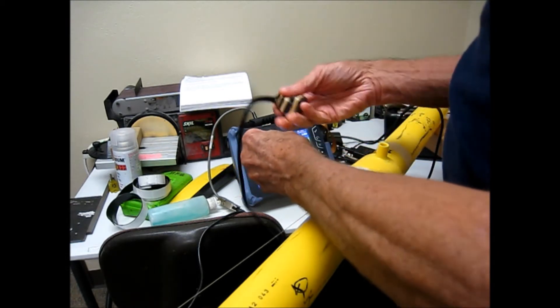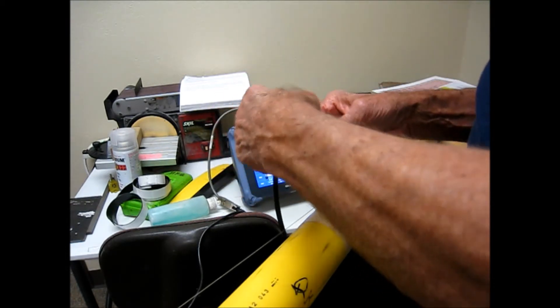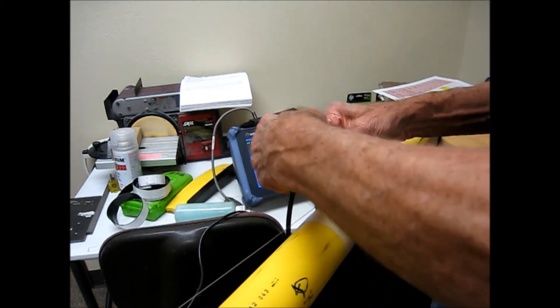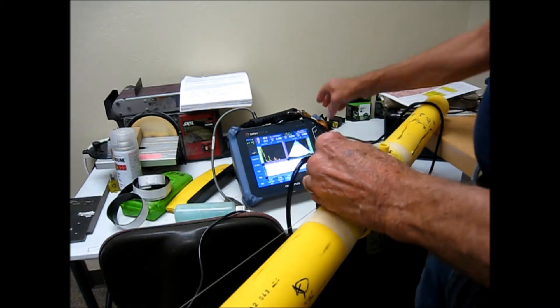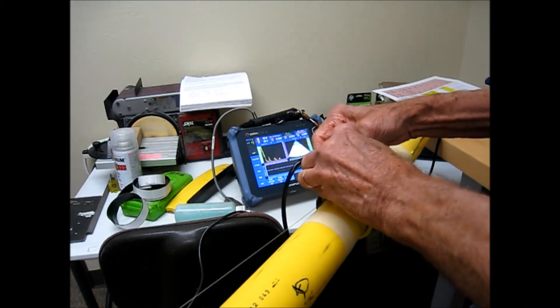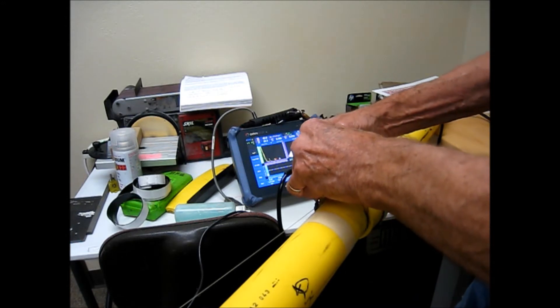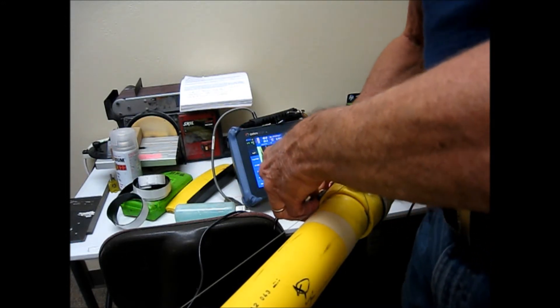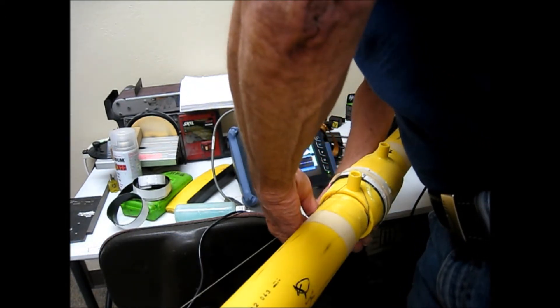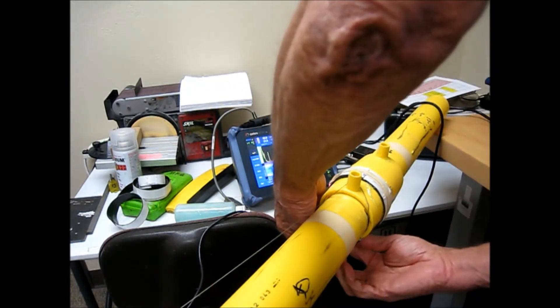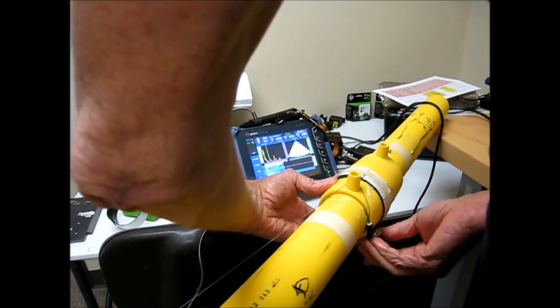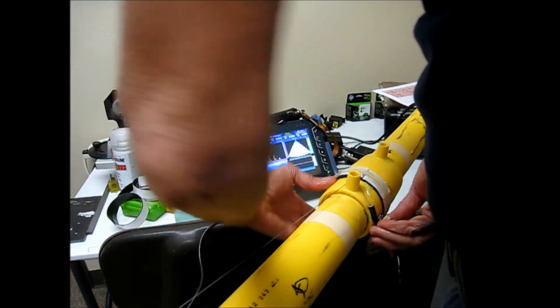Put that on there, get a little couplant, and start a new scan. Here we go. It's remembering everything it sees every millimeter as it goes around, and it's painting that in at the bottom. We can review that later.